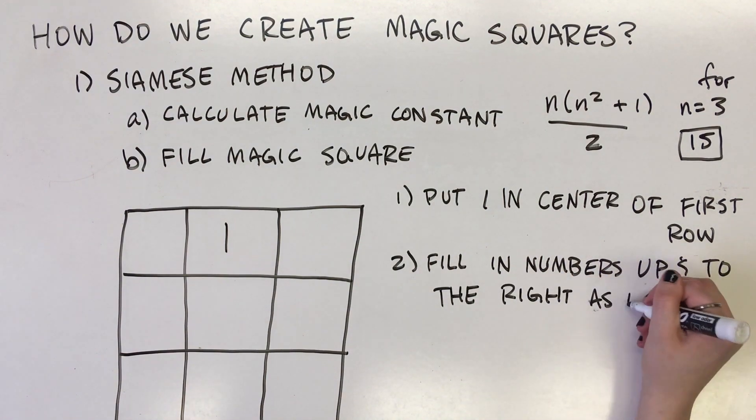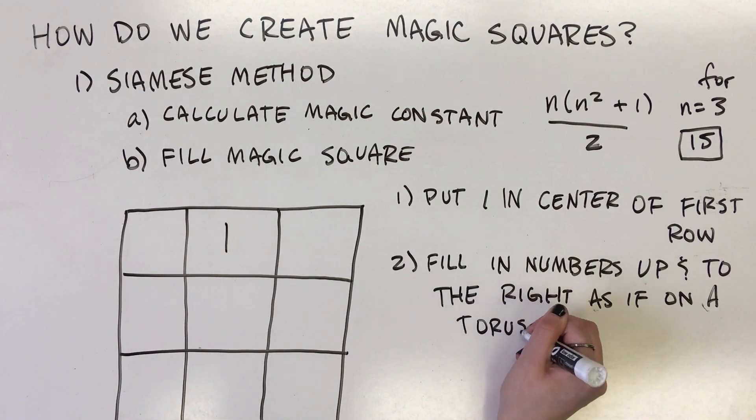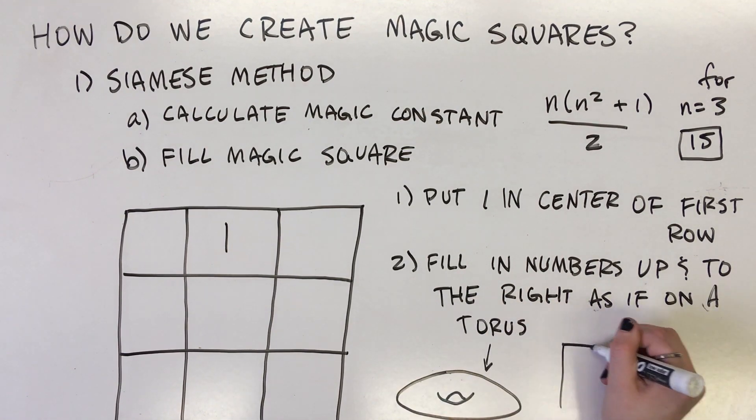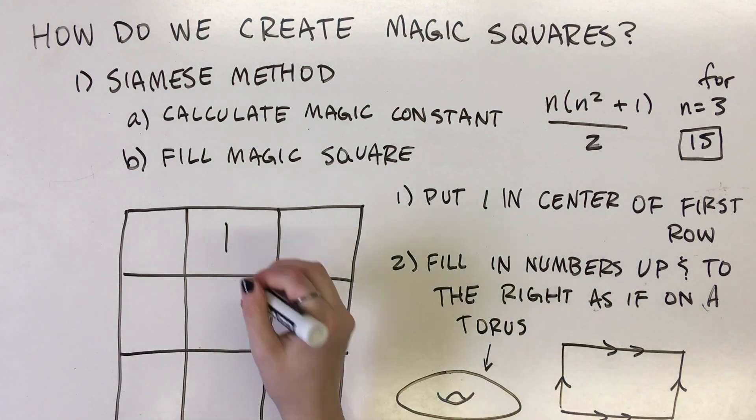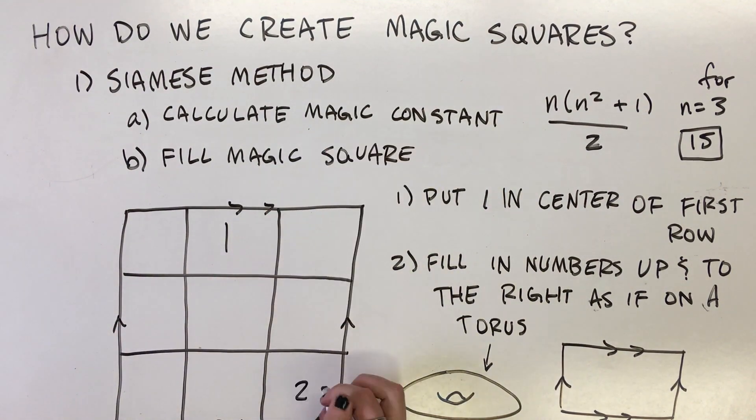You'll notice immediately that in order to place the number 2, you'll move up above the top row and off of the magic square. That's okay. Although you always work in this up 1, right 1 manner, there are three exceptions that have patterned, predictable rules.